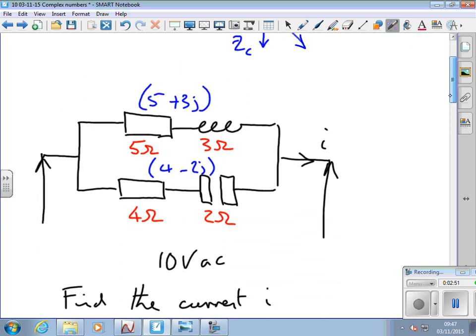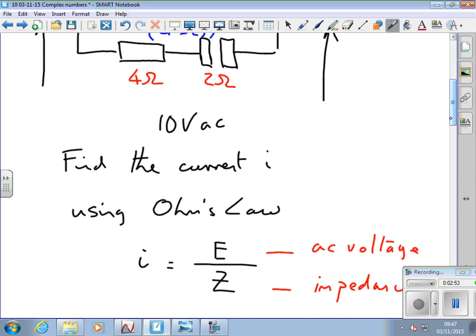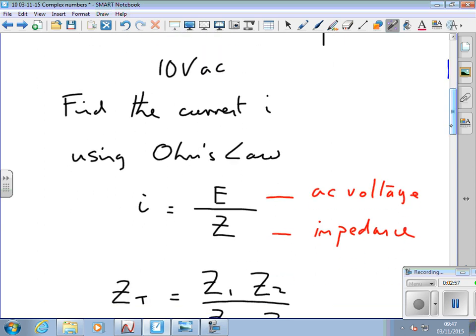So when we come to use Ohm's law to find the current in this circuit, i equals E over Z, i equals V over R. Then we can use Ohm's law, but when I want to work out the total impedance of the circuit, I have to take into account the fact that these are complex numbers. So I can't just add the resistance together - they're complex numbers. If I want to add them, I've got to use the rules for complex addition. If I want to multiply them, I have to use the rules for complex multiplication, and so on.